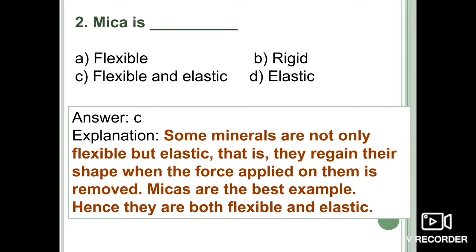There are several varieties of mica. Some minerals are not only flexible but also elastic — meaning they regain their shape when the applied force is removed. That is the property of elasticity. Mica is the best example, as it is both flexible and elastic. The correct option is option C: flexible as well as elastic.